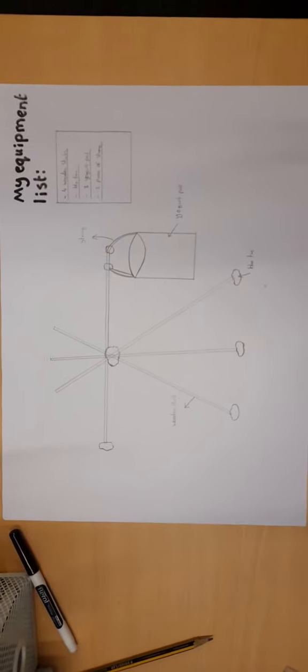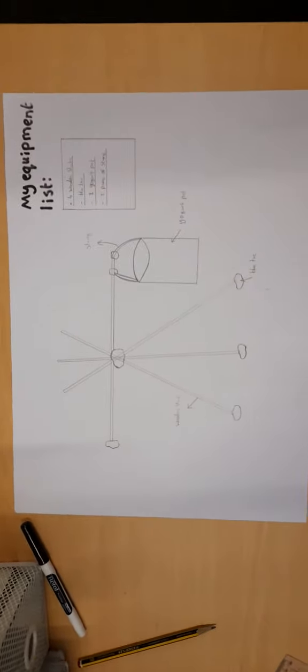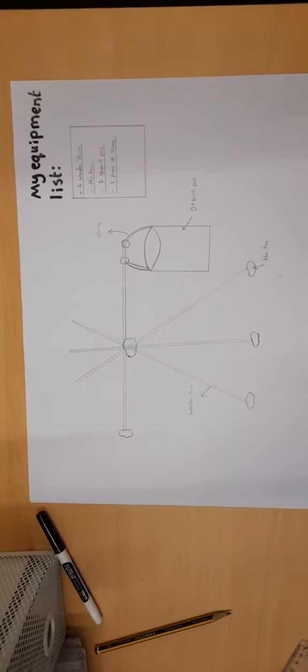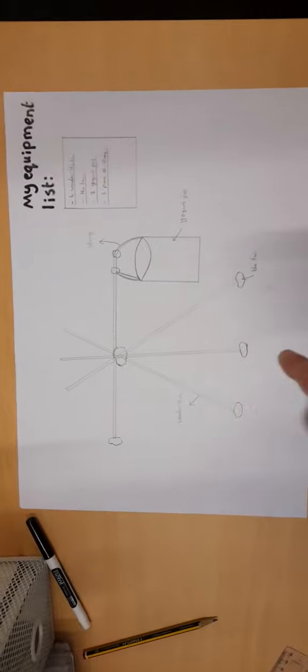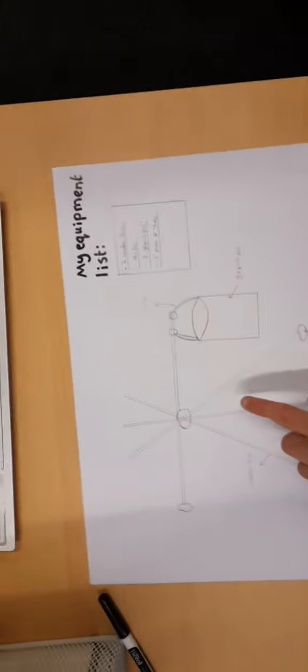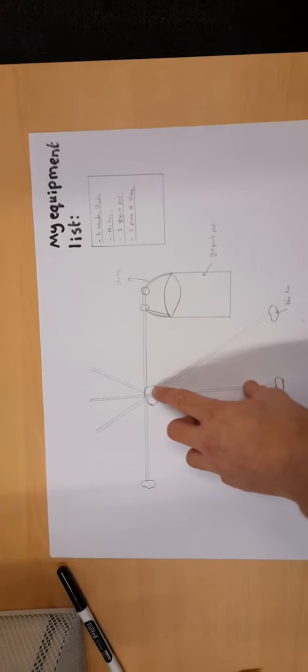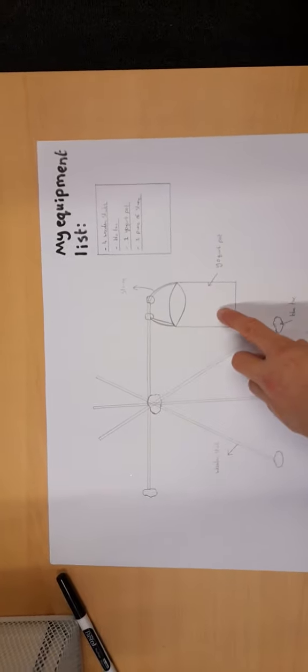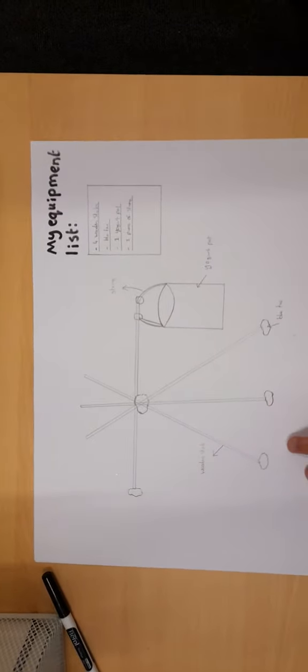So really simply, what Mr. Star has done earlier is I have obviously drawn my shadoof, my design for my shadoof. So I've got my wooden sticks, I've got my blue tack, I've got my yogurt pot, and I've got my string, and what I've done...